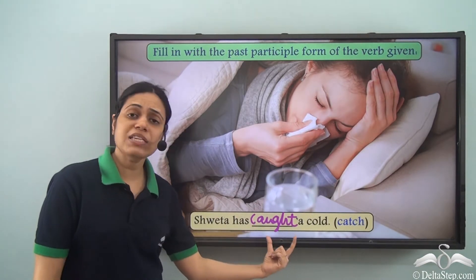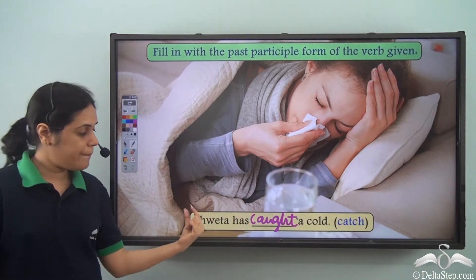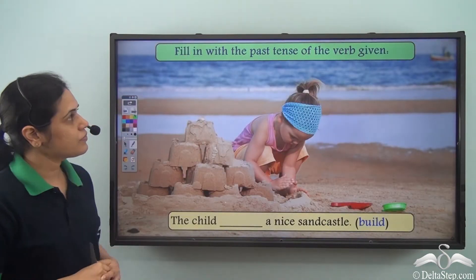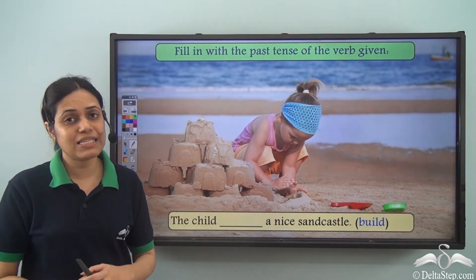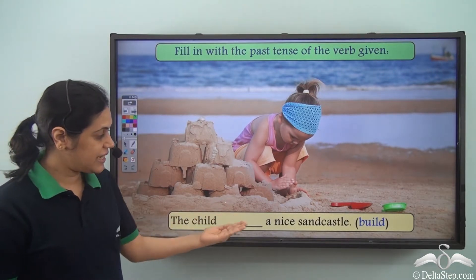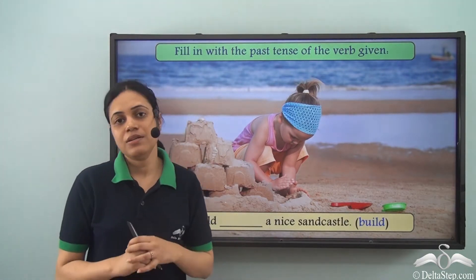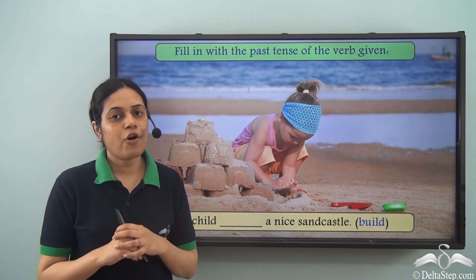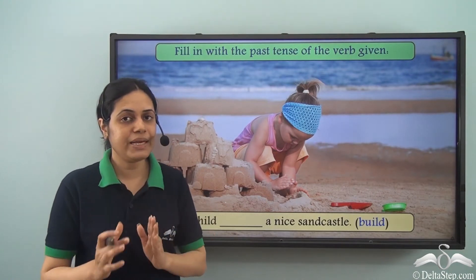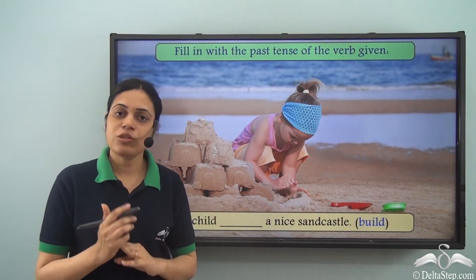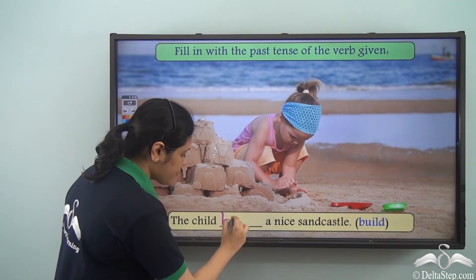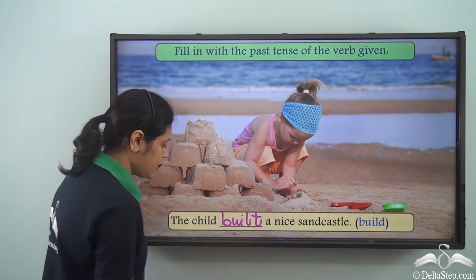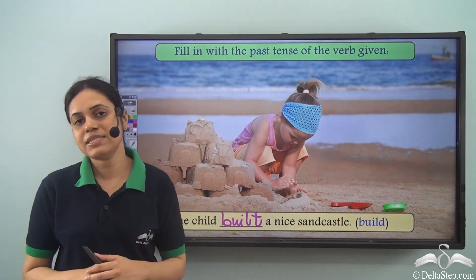We use this past participle form for present perfect tense. Once again, fill in with the past tense: 'The child dash a nice sand castle.' The verb is build. The forms are build, built, built — B-U-I-L-T. So the past tense is built. 'The child built a nice sand castle.'